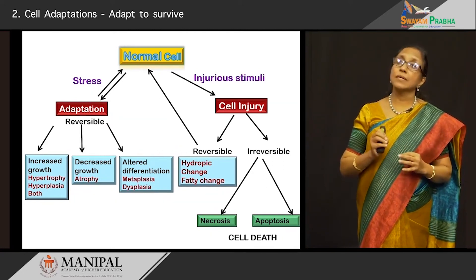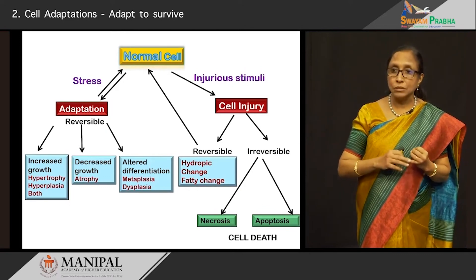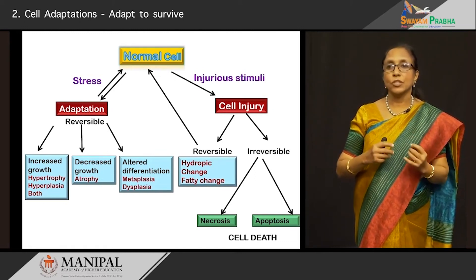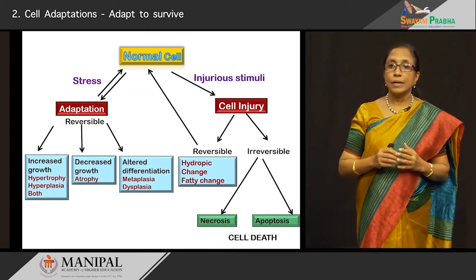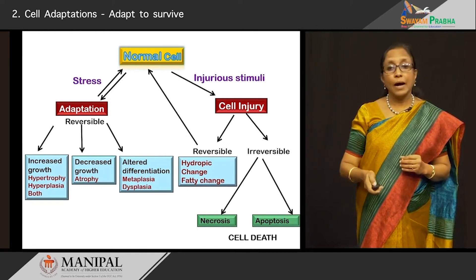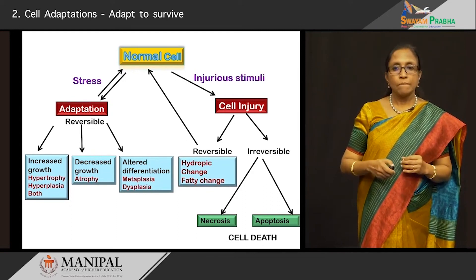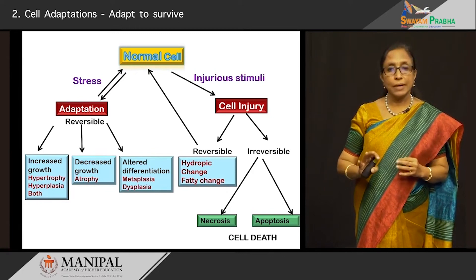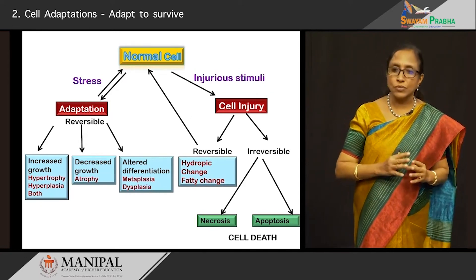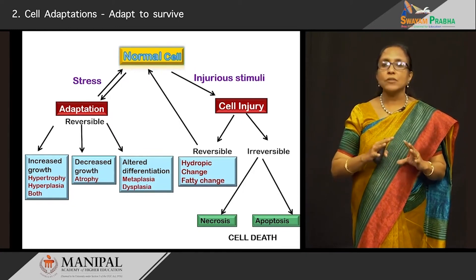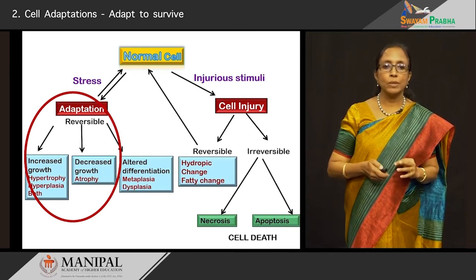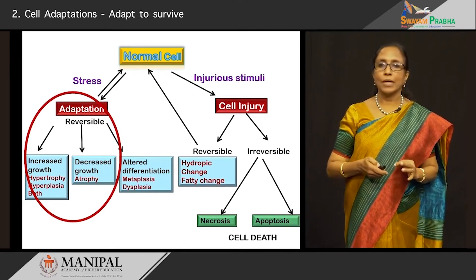On the other side, if there is an injury stimuli to that cell — be it an infection, some chemical, some toxin — the cell goes into injury mode. If it is a mild transient injury, certain reversible changes take place — what we call the hydropic change or the fatty change. If it is a severe progressive injury, the cell goes on to irreversible cell death, and the two forms of cell death are necrosis and apoptosis. Today our concentration will be on adaptations, most of which are reversible.